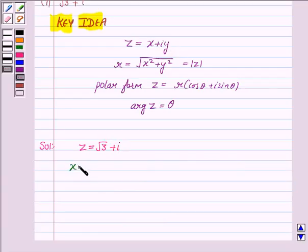Now we obtain the modulus which is equal to root of root 3 square plus 1 square, and it is equal to root 4, and again it is equal to 2.